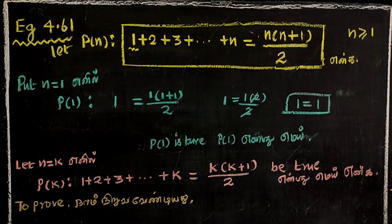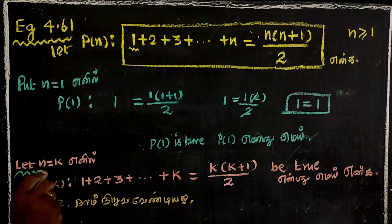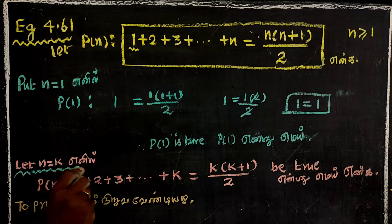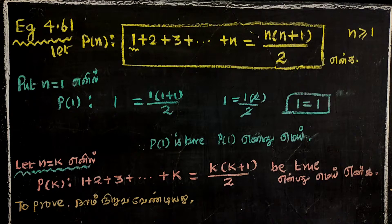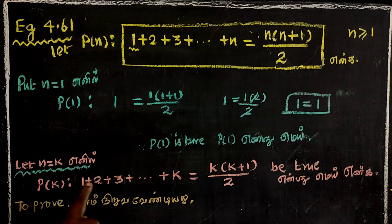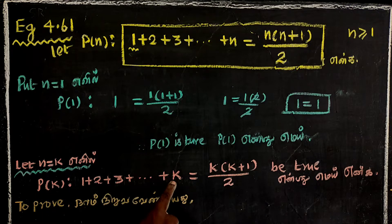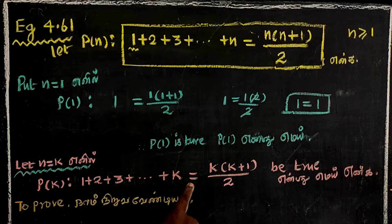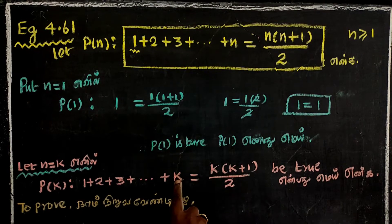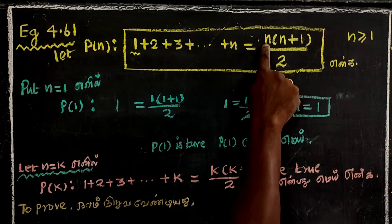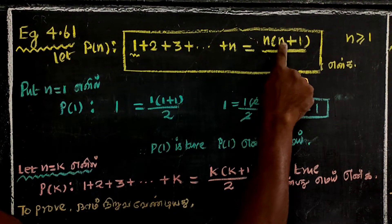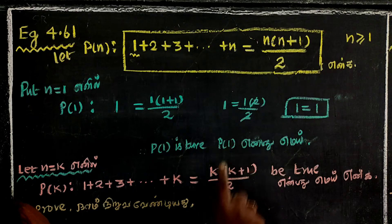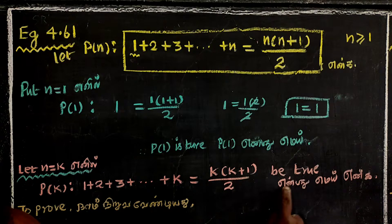Let n equal k. We assume P(k) is true: 1 plus 2 plus 3 plus etcetera plus k is equal to k(k+1)/2. Be true.